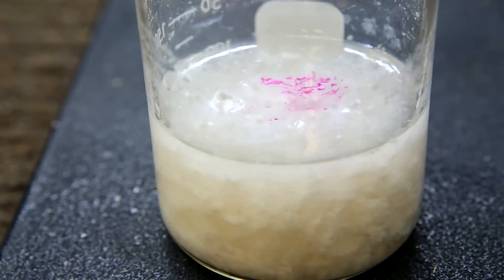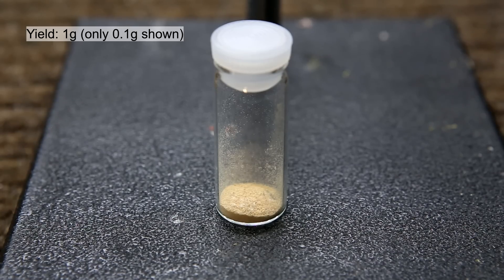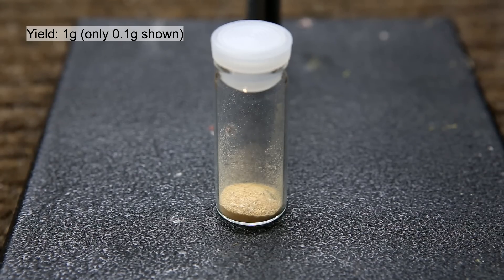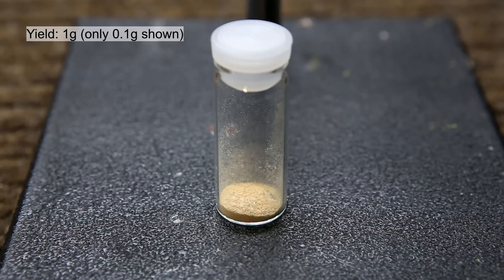This was then vacuum filtered and then dried under vacuum. After letting it dry overnight, I'm not sure why, but the phenolphthalein turned brown. Shown in this video is only about 0.1 grams, but the final yield was actually around 1 gram. So, in theory, you could expect about 10 times the amount that you see here.